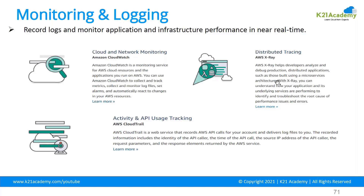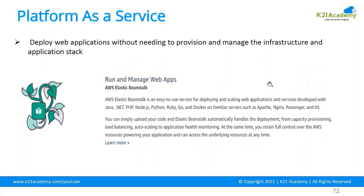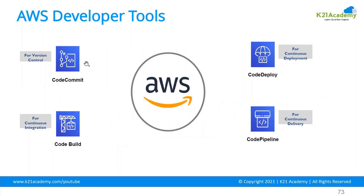X-Ray is a service for deep analysis of distributed applications and microservices, typically used for Lambda functions requiring in-depth monitoring. Elastic Beanstalk is a platform-as-a-service that makes it easy to create web applications — you simply upload your code, choose the platform (Apache, Nginx, Passenger, IIS), and get a complete running environment with full access.